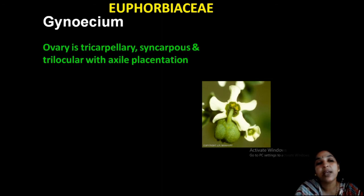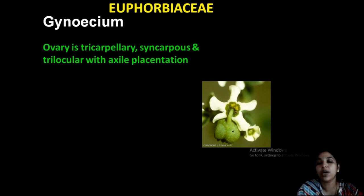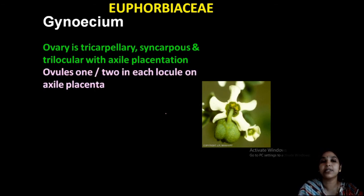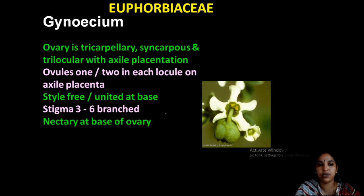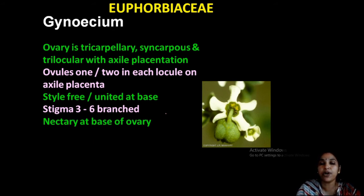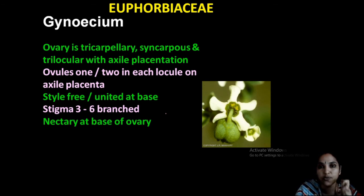The gynoecium is usually tricarpellary — three carpels: one, two, three. Three carpels are syncarpous, trilocular, with axile placentation. One ovule in each locule. Styles are free or united at the base; stigma is three to six branched. A nectary disc is present at the base of the ovary — an important point — secreting a sugary substance.